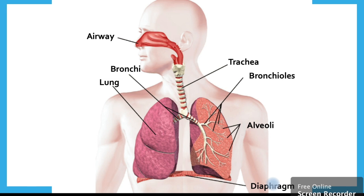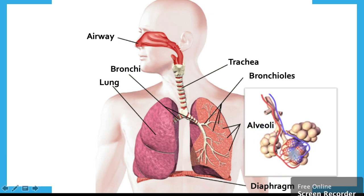Here is a close-up of the alveoli. You'll notice they look like little clouds or little trees. They also have a little network of blue and red netting around them — these are our capillaries or blood vessels. When we see blue, that means there's no oxygen in the blood — it's deoxygenated. When we see red, that is oxygenated.